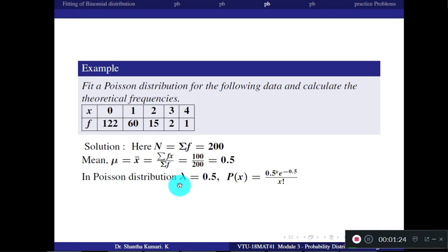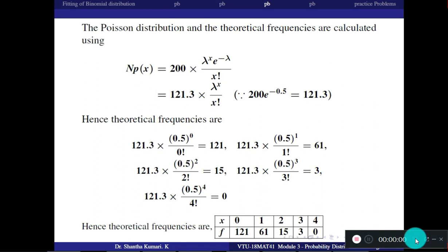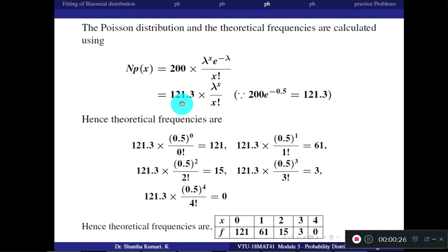In Poisson distribution, there is no need for probability of success p — only lambda is needed. Lambda equals the mean, x-bar = 0.5. The PDF is P(x) = e^(-λ) × λ^x / x!. Substituting lambda = 0.5, the constant 200 × e^(-0.5) = 121.3. For each x value, calculate N into P(x) using this formula.